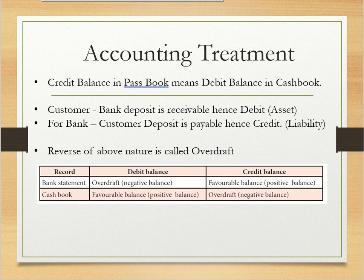Now, accounting treatment. How do we treat banking transactions for customers and organizations? Credit balance in pass book means debit balance in cash book. That means when the bank pass book has a credit balance, we have a debit balance in the cash book. When we deposit money in the bank, that money is receivable for us in the future, so we have a debit balance which is deemed as an asset.